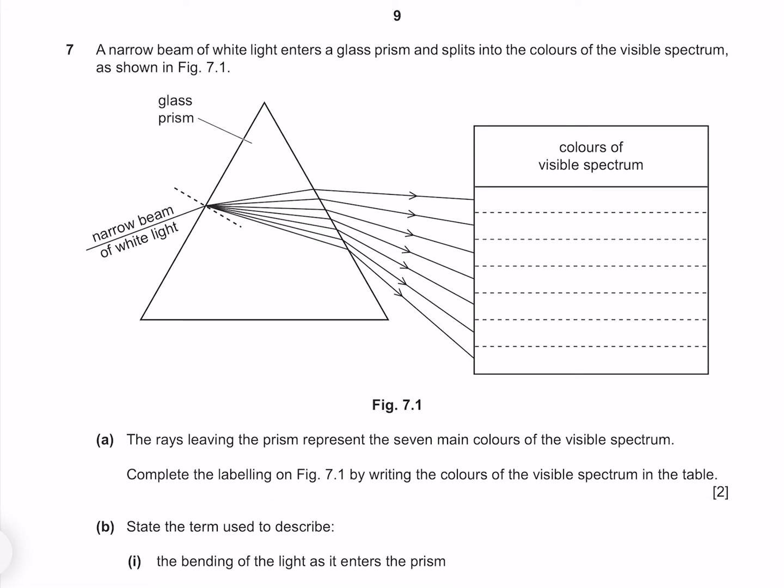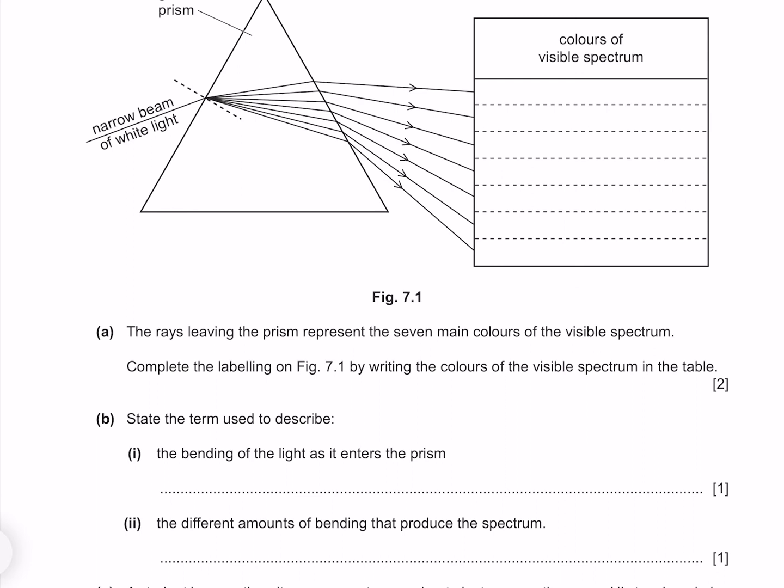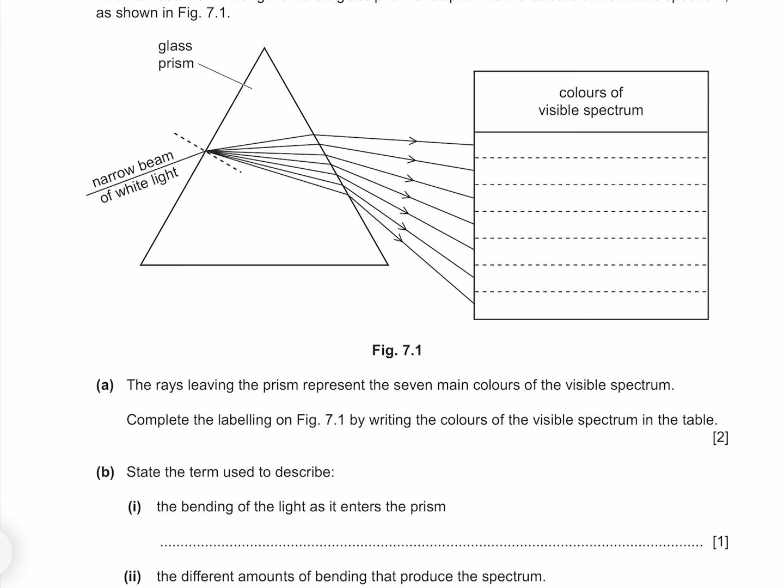A narrow beam of white light enters a glass prism and splits into the colours of the visible spectrum, as shown in figure 7.1. The rays leaving the prism represent the seven main colours of the visible spectrum. Complete the labelling on figure 7.1 by writing the colours of the visible spectrum in the table. The effect we see here is refraction, where higher wavelengths are refracted more than lower. A useful way to remember this is that violet refracts more violently, so we're going to expect violet here and red here. The seven main colours of the visible spectrum can be remembered with the phrase Roy G. Biv: red, orange, yellow, green, blue, indigo, violet.